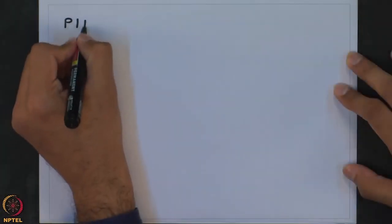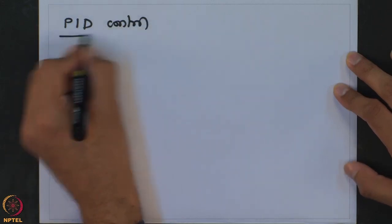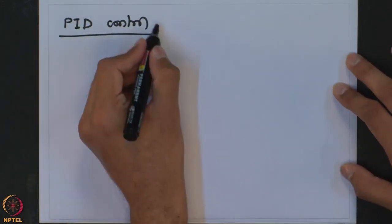Welcome back. Before the break we were looking at why we typically add a derivative action in addition to PI control. The reason is it improves the speed of response by having some sort of prediction about where the system is moving. With the help of that, what we get is known as a PID controller.